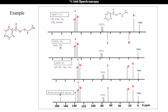In DEPT 90, only CH group carbon atoms are seen, which here are carbons B, C, and D. In DEPT 135, CH and CH3 carbon atoms B, C, D and H are seen in positive phase. The CH2 carbon atoms G and F give negative signals in DEPT 135.